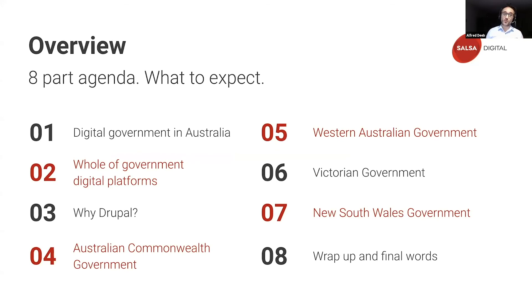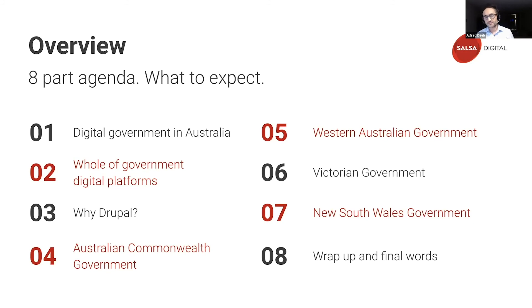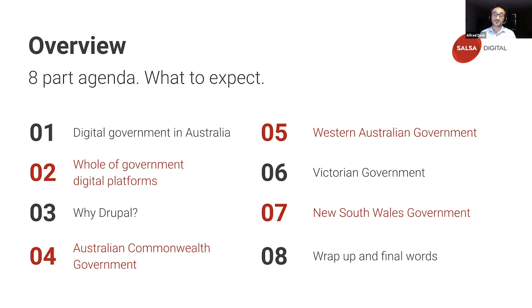It's a long session with lots to cover, and we've broken the session into eight key parts. I'll open up by talking about the role, the pain, the authorities, and the policies for digital government in Australia. Then we'll talk about the characteristics and qualities of a whole-of-government digital platform and programs, the journey and criterion adoption of Drupal within government, and highlights for each of the major government jurisdictions adopting Drupal in Australia — namely the Commonwealth and the three states of Western Australia, Victoria, and New South Wales. Finally, we'll wrap up and hopefully allow some time for questions.